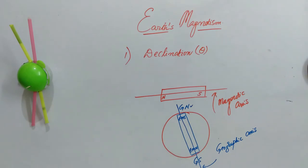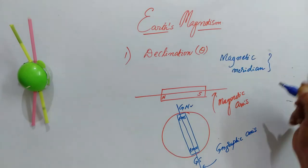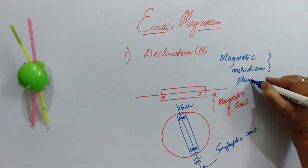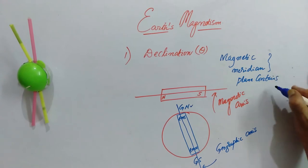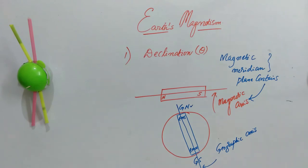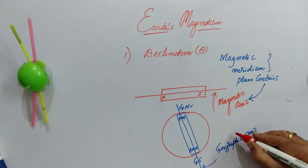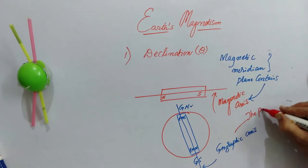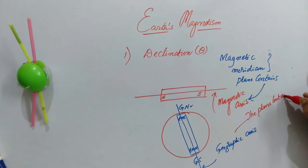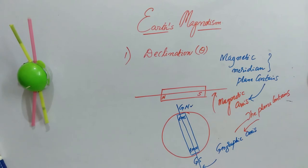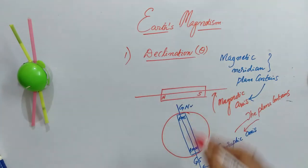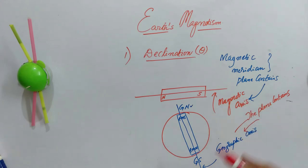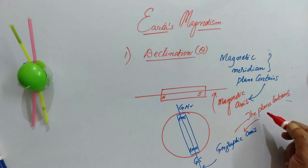The plane which contains the magnetic axis is called the magnetic meridian. Similarly, there is the geographic meridian — it is the plane that contains the geographic axis. Once you understand these terms, it is very easy to define declination. Declination can be defined as the angle between the geographic axis and the magnetic axis, or equivalently, the angle between the geographic meridian and the magnetic meridian.